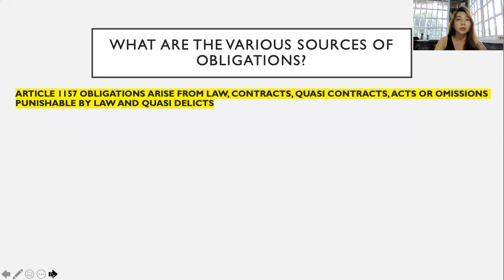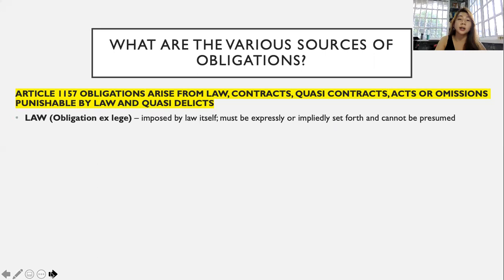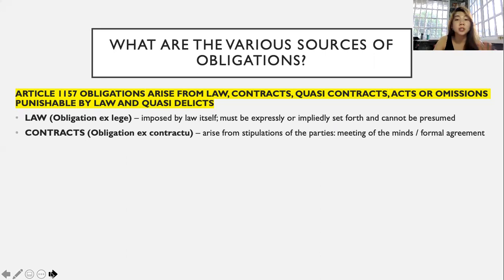What are the various origins of obligations? Article 1157 says that obligations arise from: law, contracts, quasi-contracts, acts or omissions punishable by law, and quasi-delicts. Obligations arising from law are imposed by the law itself; they must be expressly or impliedly set forth and cannot be presumed. Obligations arising from contracts arise from stipulations of the parties — a meeting of the minds. It is a formal agreement that must be complied with in good faith because it is the law between the parties. Neither party may unilaterally evade the obligation in the contract unless the contract is invalid or the other party assents.